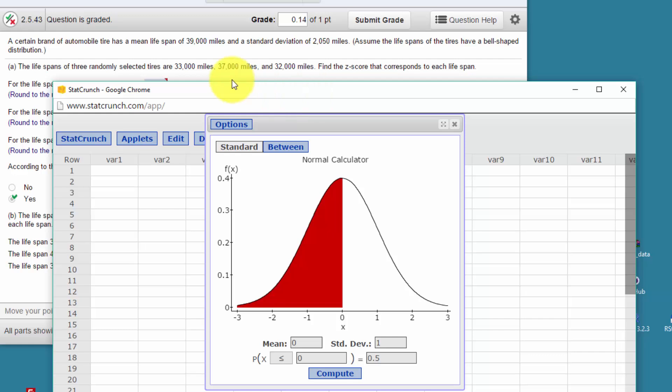We're given a value of 33,000 miles, 37,000 miles, and 32,000 miles, so we've got to find the z-score. Well, here's a way that we can back into this.